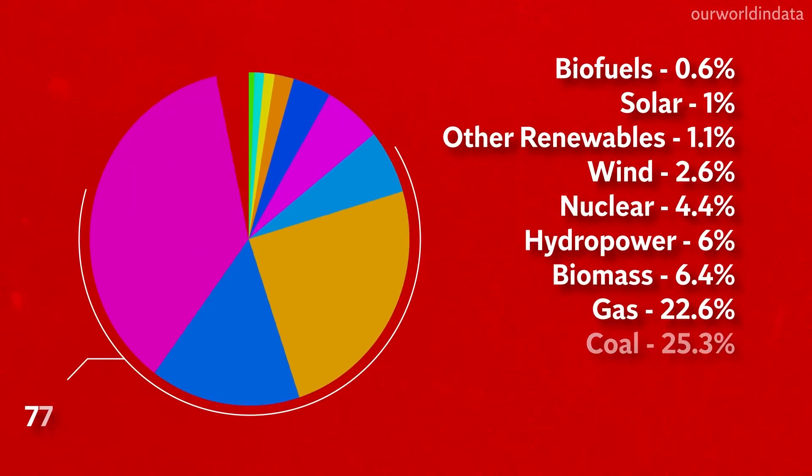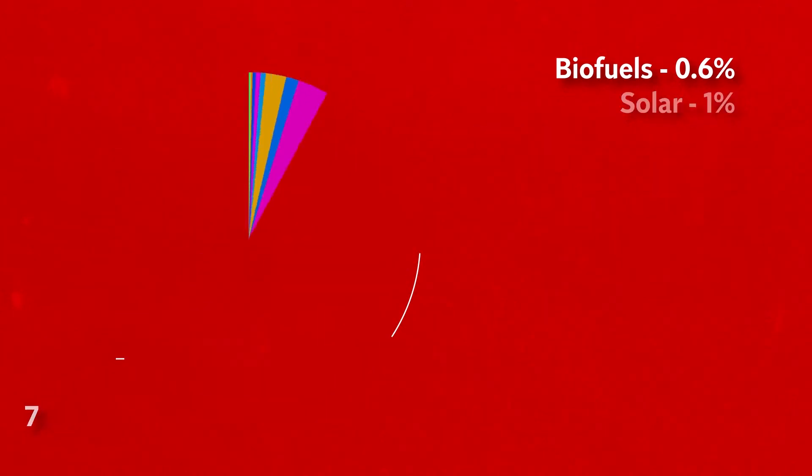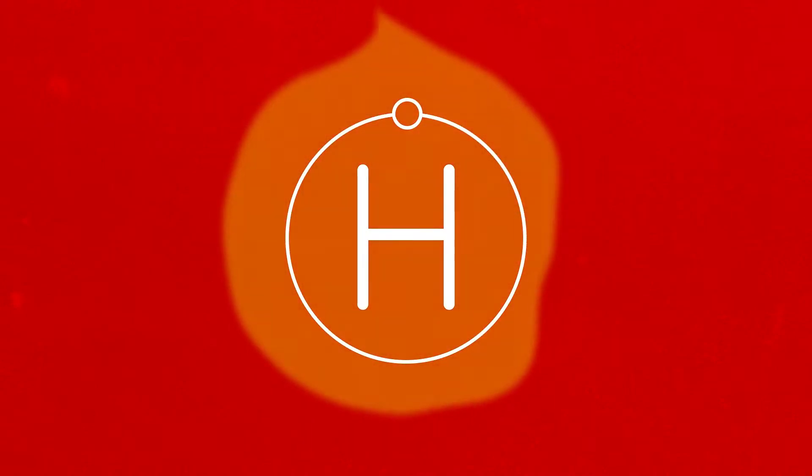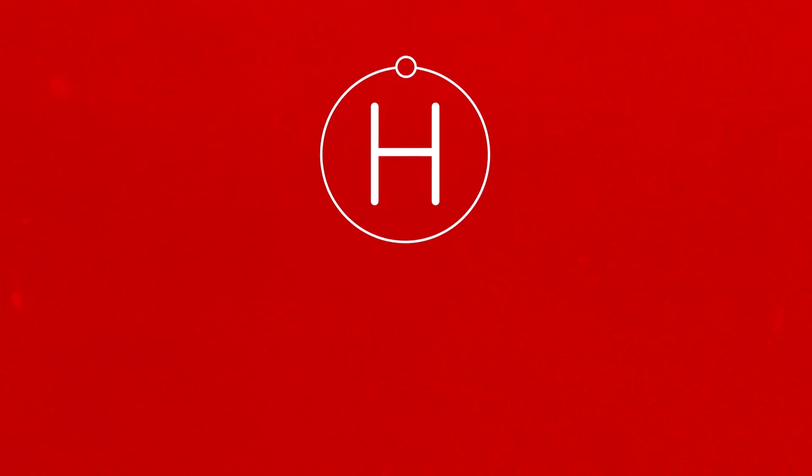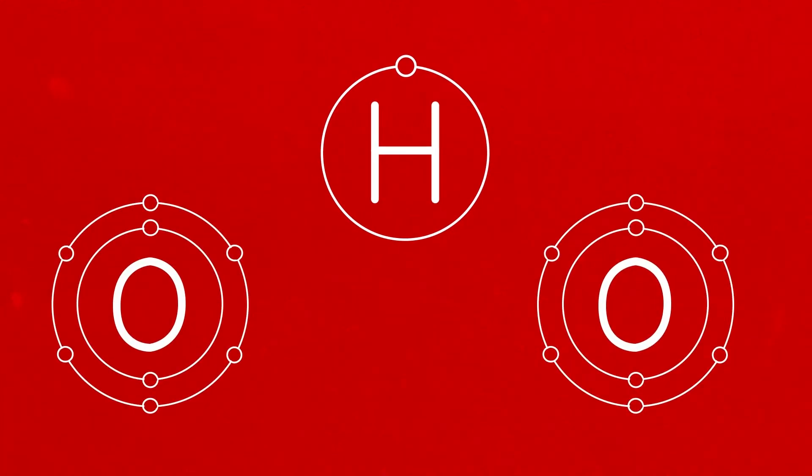Fossil fuels still make up almost 80% of all of the energy produced on Earth, but there could be cleaner, natural alternatives. When hydrogen is burnt, it produces heat, which can be captured to generate electricity. On top of that, it combines with oxygen to produce hydrogen dioxide. It sounds too good to be true.